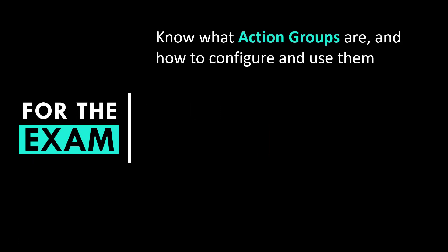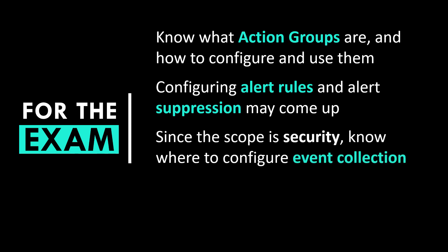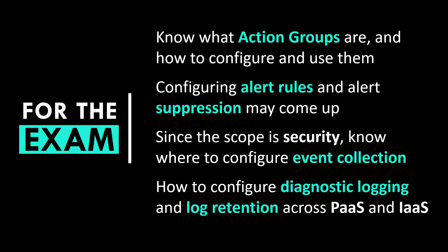For the exam, make sure you know your way around Azure Monitor. With regards to alerting, know what action groups are and how to configure and use them. If you don't have a lot of experience with Azure Monitor, go to the AZ-500 exam prep guide — there's a tutorial on the Microsoft site for configuring and tuning an alert. For alert rules, it's worth knowing how to handle suppression so you don't get unwanted duplicate alerts. Since the scope is security, know where to configure event collection for your VMs, and know how to configure diagnostic logging across all PaaS and IaaS services.